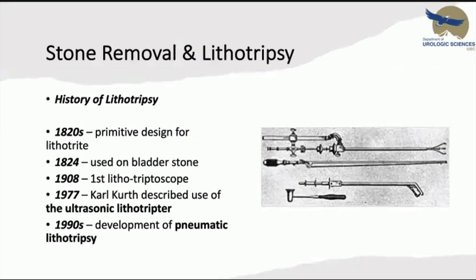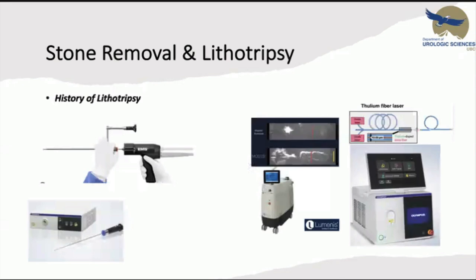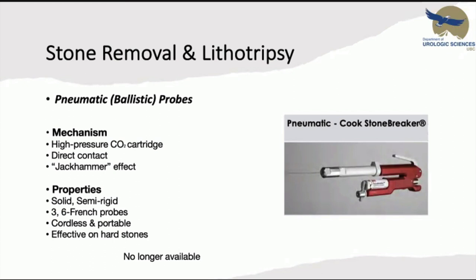Moving to stone removal and lithotripsy: ultrasonic lithotripsy was first described in 1977, pneumatic lithotripsy in the 1990s. Now we have many different devices and technologies to fragment stones. Pneumatic probes use high-pressure CO2 cartridges, need direct contact, and deliver a jackhammer effect. They have three to six French probes, are cordless and portable.